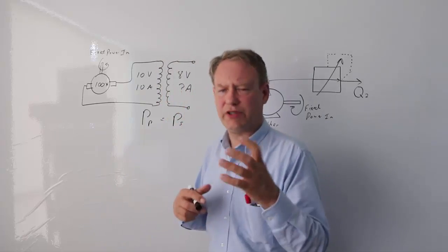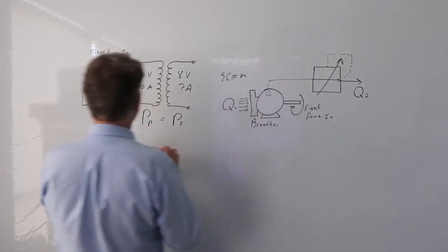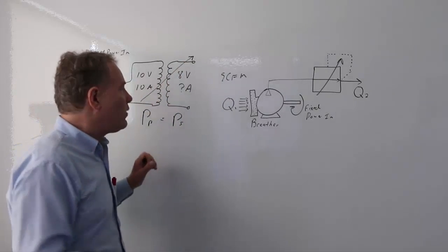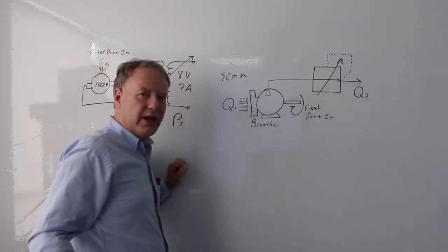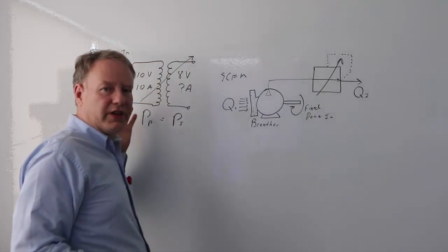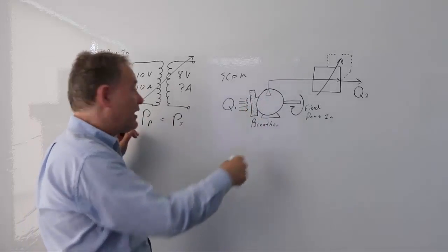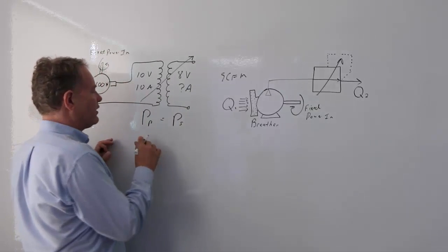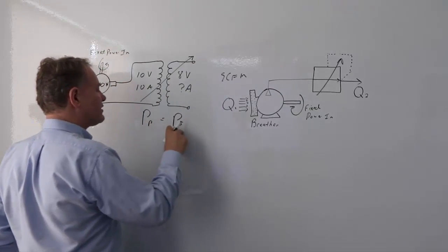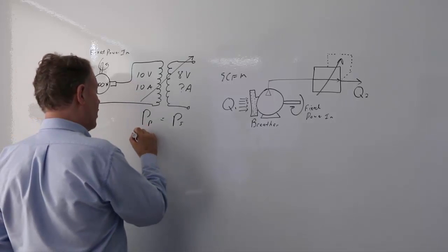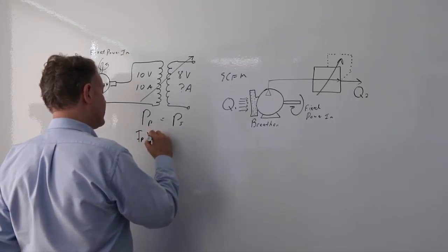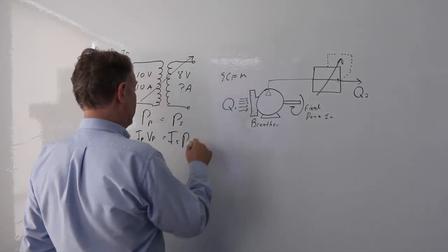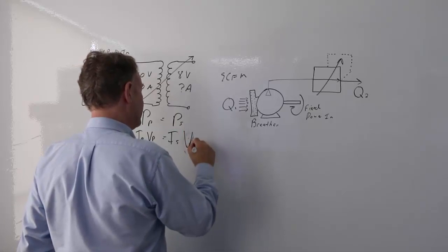Let's do the math. Say I had a variable transformer — my pressure regulator is my variable transformer. I know that power on the primary equals power on the secondary: I₁ × V₁ = I₂ × V₂. So if I've got 10 volts and 10 amps on this side, and I need 8 volts on the other side, what happens to my current?